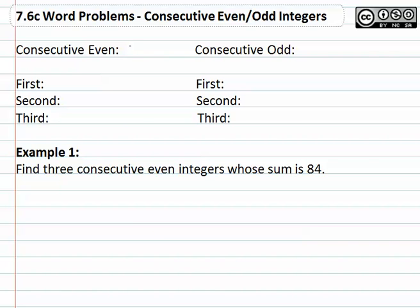Consecutive even integers would be the same idea as consecutive integers, but now they're even. So we'd have 8, 10, 12 for example. What you might notice now is the space between the even numbers is no longer one, but the space is plus 2.